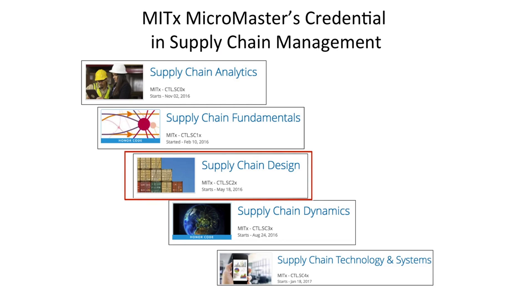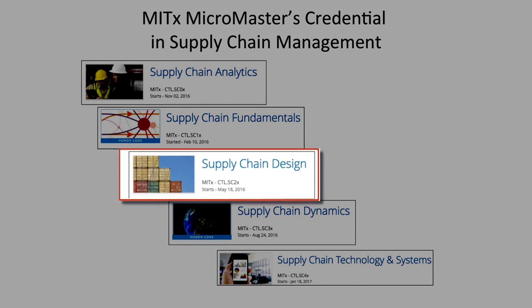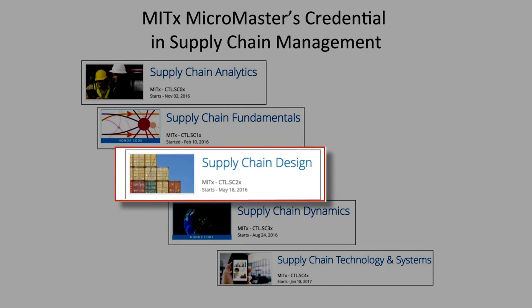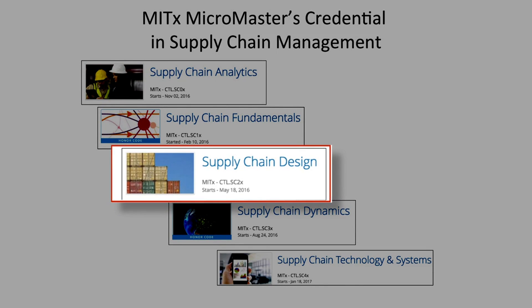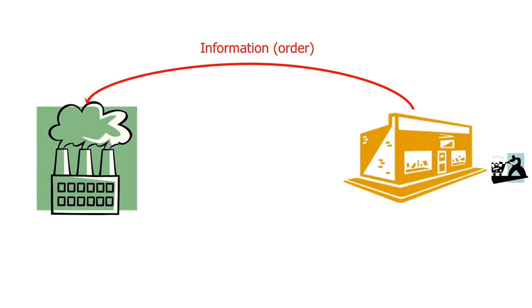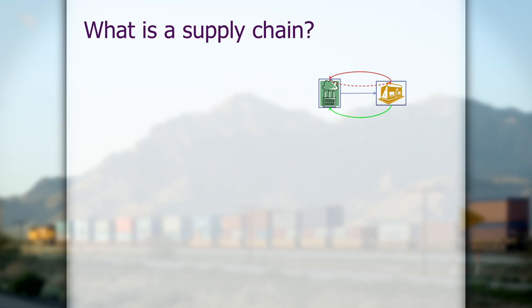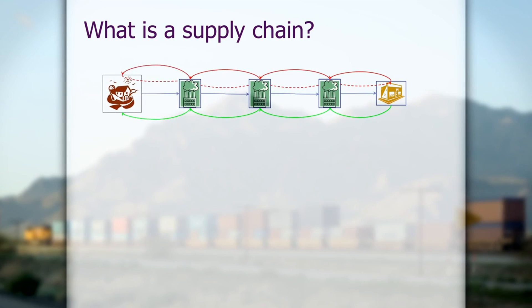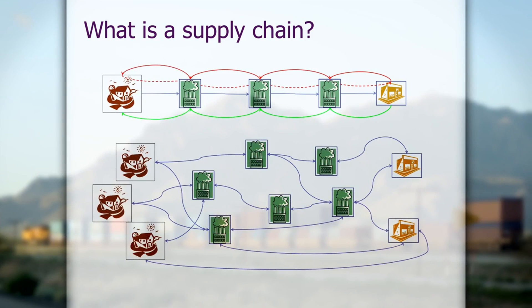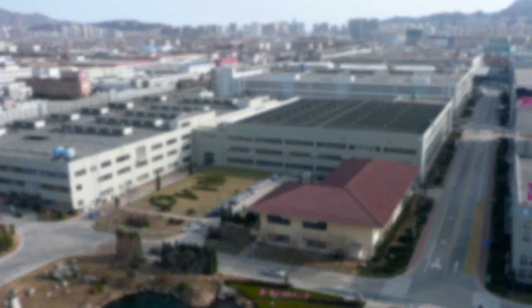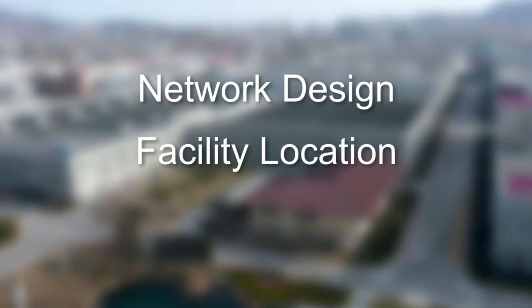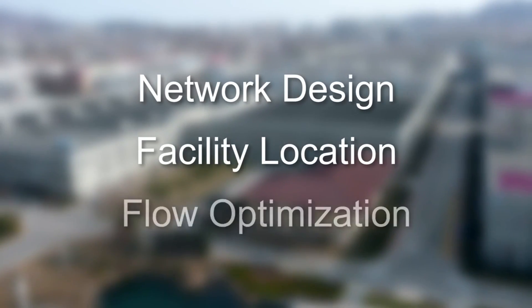So what will you learn if you take CTL.SC2X, Supply Chain Design? On completion of the course, you will have a deep understanding of and ability to design the three flows — information, physical, and financial — that create a successful supply chain. We'll start the course by introducing the design of the physical flow of a supply chain. This is sometimes called network design, facility location, or flow optimization.